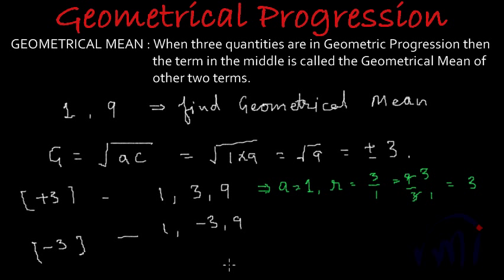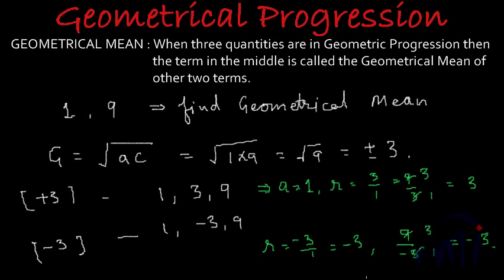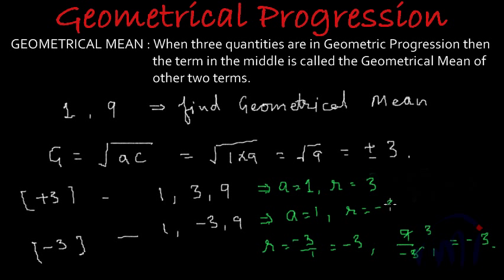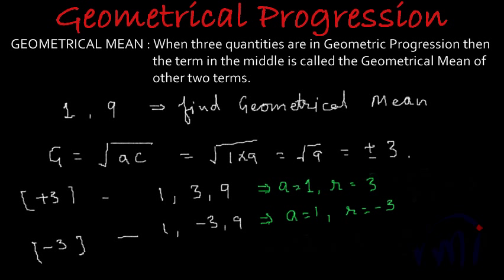In the second case, taking the first two terms, r equals minus 3 divided by 1, which is minus 3. Taking the second and third terms, r equals 9 divided by minus 3, which also gives minus 3. So in the first case, a equals 1 and r equals 3; in the second case, a equals 1 and r equals minus 3. When given two numbers, you will always get two geometrical means — one positive and one negative, as we found plus 3 and minus 3 between 1 and 9.